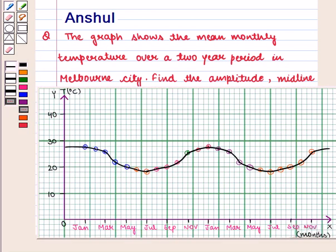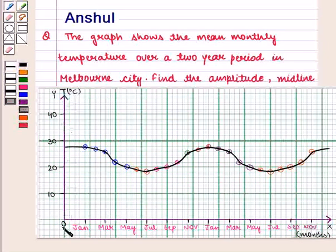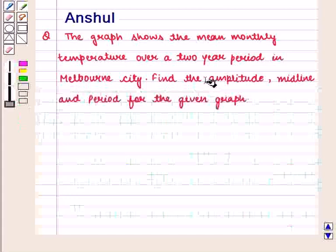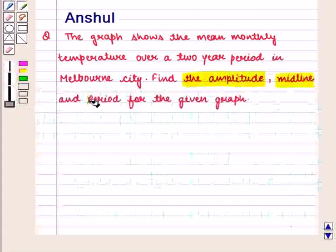In this question we are given the graph showing average monthly temperature for 2 years. We are given months on the horizontal axis and temperature in degrees Celsius on the vertical axis. And we need to find the amplitude, midline and period for the given graph.